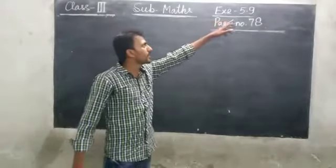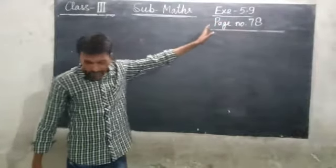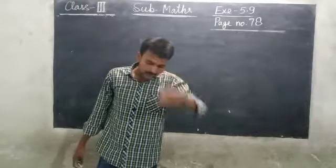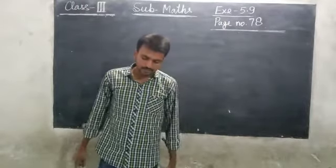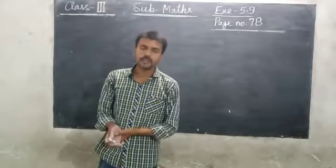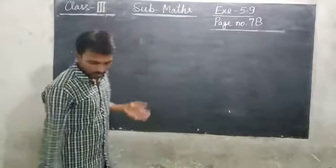Now class 3, exercise 5.9, page number 78. The question is, find the quotient and the remainder, and also verify your answer.